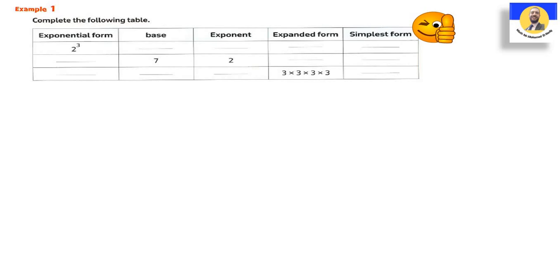Complete the table: معي table على شكل Exponential Form، قول لي مين الـBase ومين الـExponent، واكتب على شكل Expanded وعلى شكل Standard Form. لو 2³: الـBase = 2، الـExponent = 3، الـExpanded Form = 2×2×2، والـStandard Form = 8. لو Base=7 وExponent=2: يبقى 7²، الـExpanded = 7×7، والـStandard = 49 (مش 14). لو Expanded Form = 3×3×3×3: الـExponential Form = 3⁴، الـBase=3، الـExponent=4، والـStandard Form = 81.